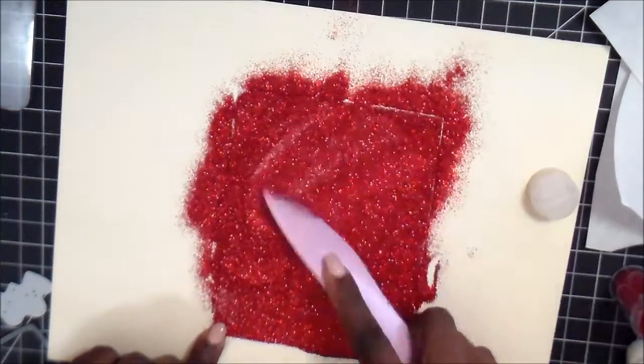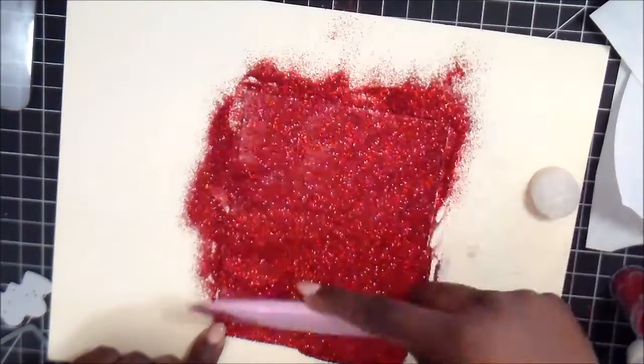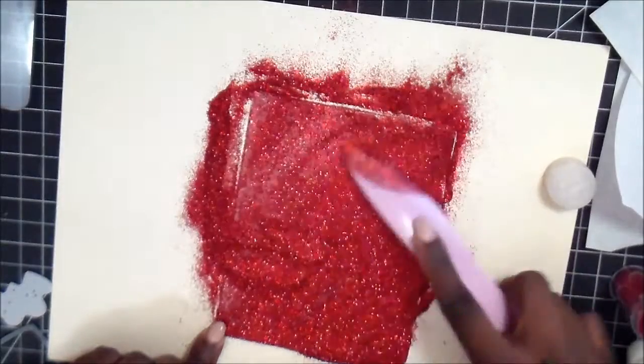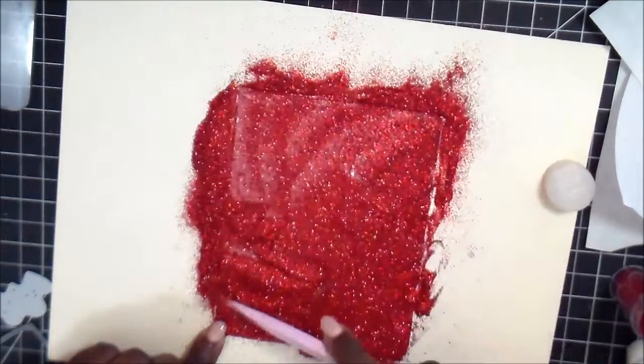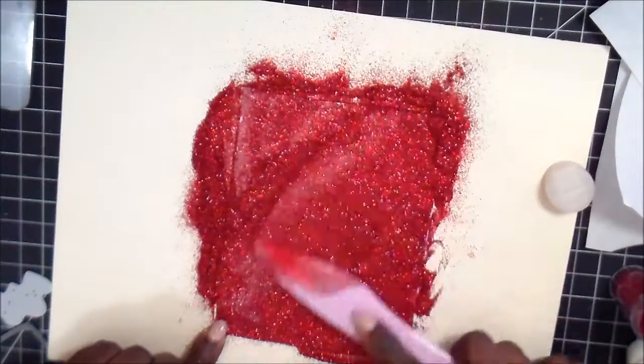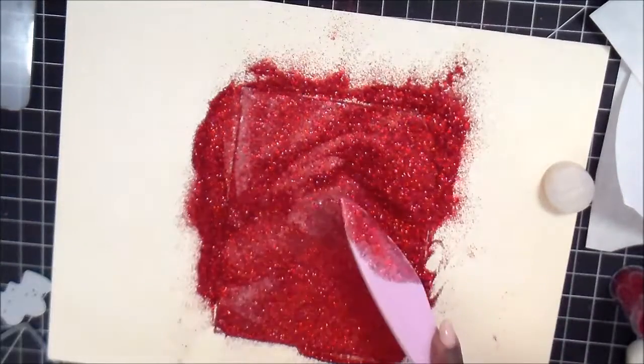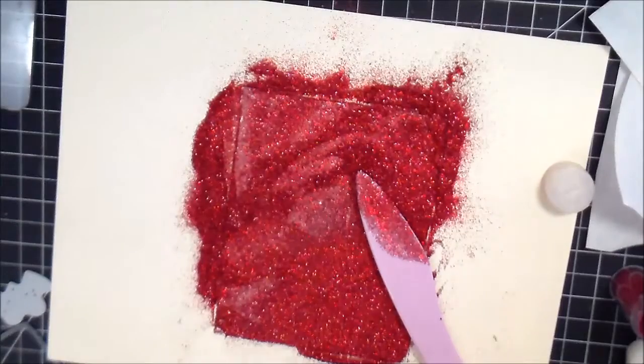Because with that stick-it adhesive on top, it's got just an open area of that stick-it sheet. So I'm just taking my bone folder and trying to rub it in so that once you're done you don't have as much glitter coming off of the cardstock.